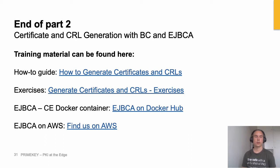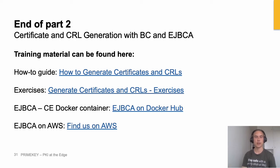Now it's time for you to look at the handouts. We have a few examples of certificate generation as well as CRL generation. We have a couple of examples of how to sign a request and send it off to EJBCA. It's probably too much to complete right now, but at least take a look, get a feeling for how it works. If you have some time after the workshop, you can take a look at the remaining exercises.